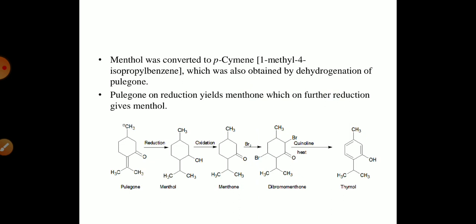Here you can see the beta-methyl adipic acid is formed when the menthol is treated with the KMnO4. So the menthol was converted to the p-cymene which is 1-methyl-4-isopropyl benzene which was obtained by the dehydration of the pulegone. So in this kind of reaction you can see that the reduction oxidation process is combinedly done and finally we get thymol as a product.